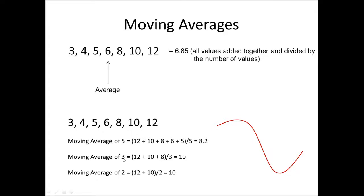If we had a moving average of 3, we take the last 3 numbers — 12, 10, 8 — add them together, divide by 3, which gives us 10. If we had a moving average of 2, we would take the last 2 numbers — 12 and 10 — add them together, divide by 2, and that would give us our moving average. At the close of each candle on a chart, a moving average can be calculated and plotted on our chart, and once we have a number of plotted moving averages, our moving average will look something like this.